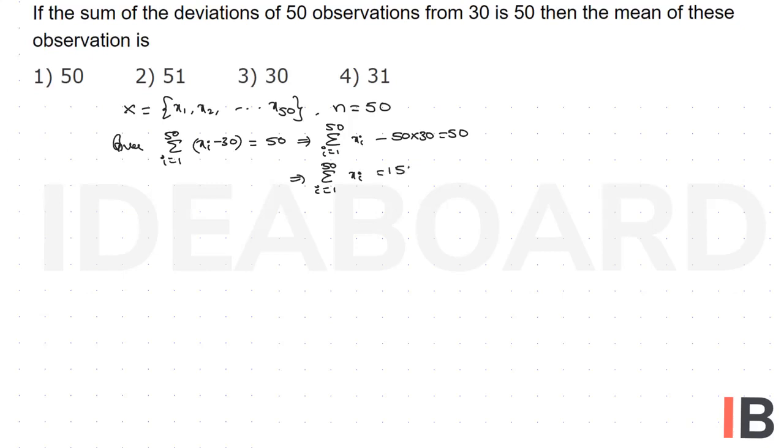That implies sigma i equals 1 to 50, xi equals 1550. Therefore, the mean of the observations x bar equals sigma i equals 1 to 50, xi divided by 50, which equals 1550 divided by 50, which equals 31.